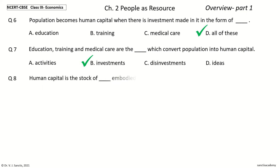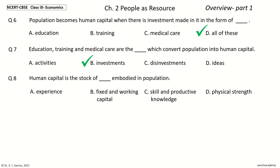Question 8: Human Capital is the Stock of ___ embodied in Population. The options are: Experience, Fixed and Working Capital, Skill and Productive Knowledge, Physical Strength. Your time to choose. And the answer is: Skill and Productive Knowledge. So, Human Capital is the Stock of Skill and Productive Knowledge embodied in Population.